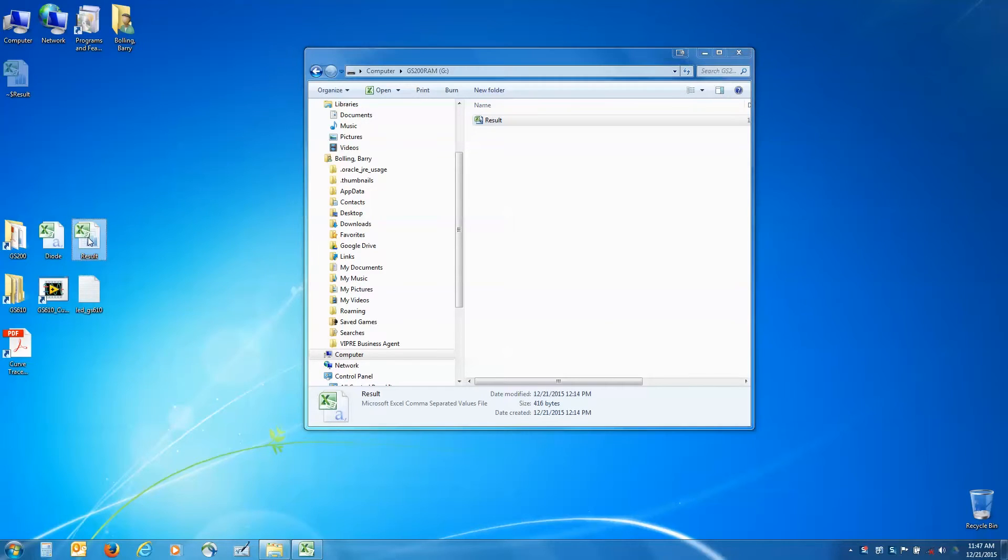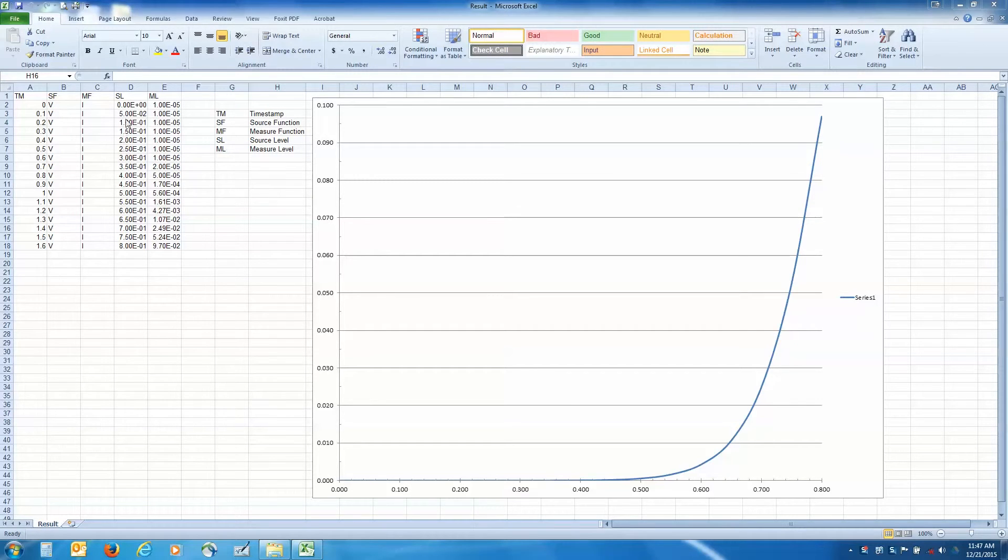Now I simply open the file in Excel. And here in the columns, you can see the voltage source value and the current source values. Here is the IV plot.